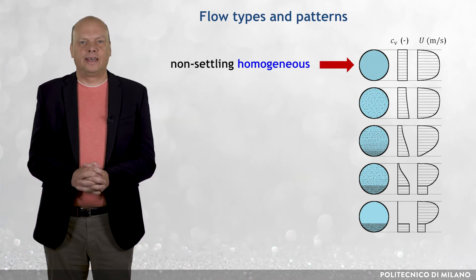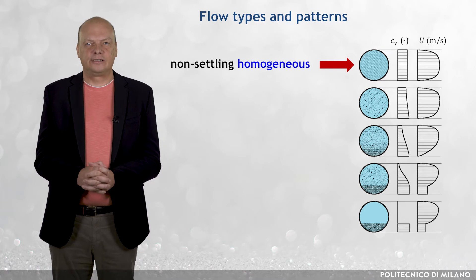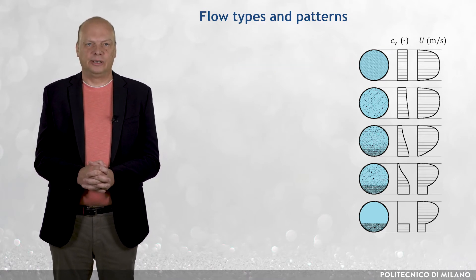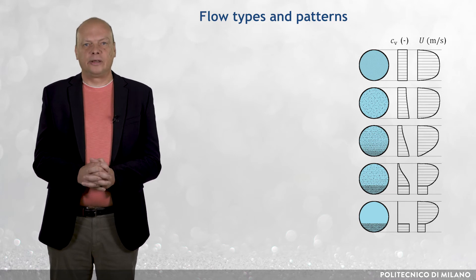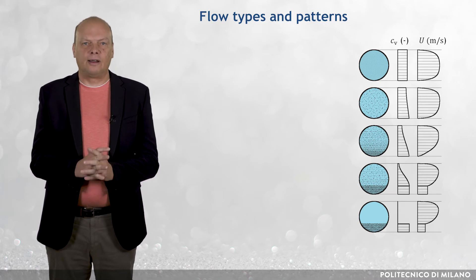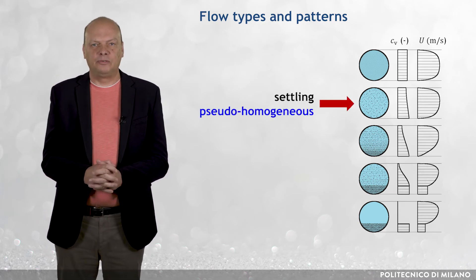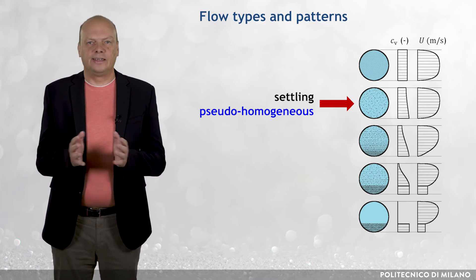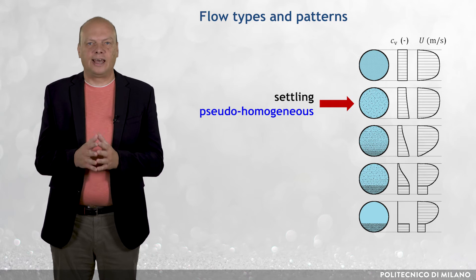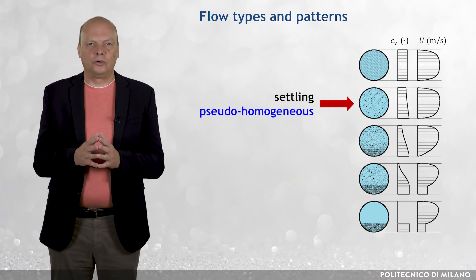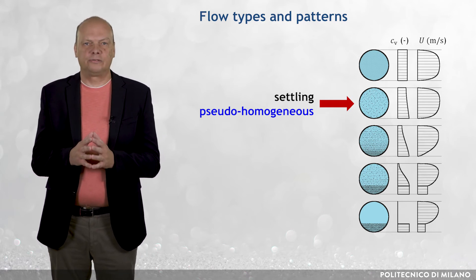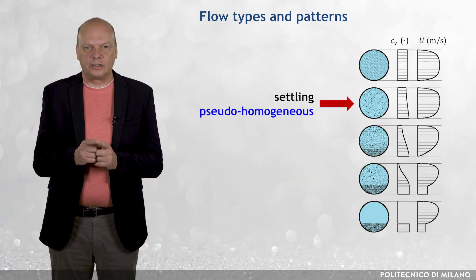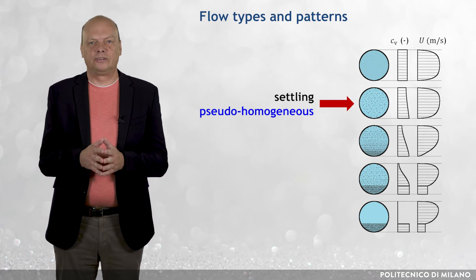Others behave as non-Newtonian slurries exhibiting either laminar or turbulent flow regime in a pipe. A slurry of somewhat larger particles, say between 40 and 200 micron, which is the fine sand range, exhibits a slightly different behavior called pseudo-homogeneous flow. The flow is Newtonian at all concentrations of solids and usually turbulent.